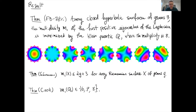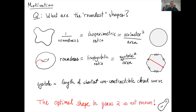Instead of telling you the details of the proof of this theorem, I want to tell you the story of how we ended up there, starting with the problem that motivated us. The motivating question for me is: what are the roundest shapes out there? And of course, that depends on what shapes we're considering and what 'roundest' means.